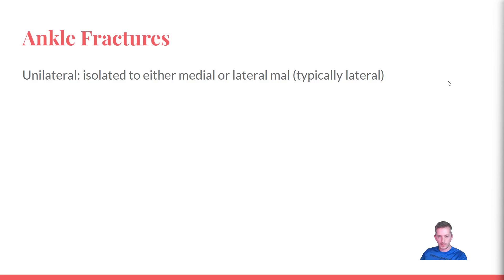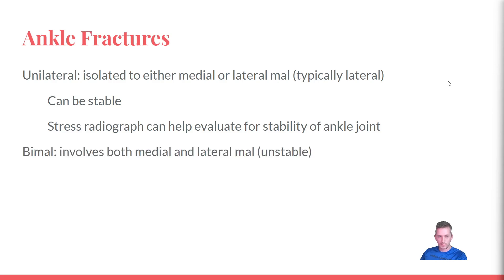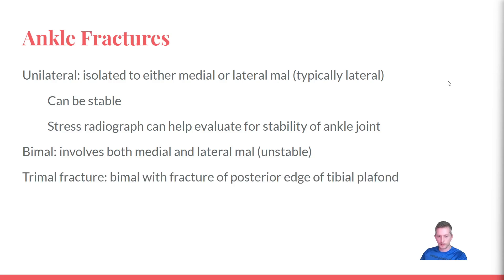A unimalleolar ankle fracture is isolated to either the medial or lateral malleolus — typically the lateral malleolus, as lateral ankle sprains are more common. These can be stable, though stress views may be needed. A bimalleolar fracture involves both the medial and lateral malleolus and is inherently unstable. A trimalleolar fracture is the same but also involves the posterior edge of the tibial plafond.